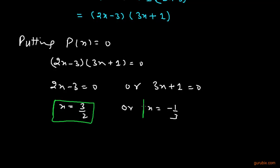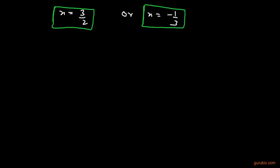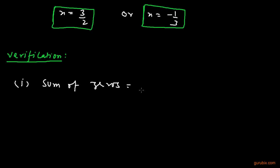At these two points the graph of the polynomial intersects the x-axis. Now we shall verify the relationship between the zeros and the coefficients. For verification, we first find the sum of zeros: 3 over 2 plus minus 1 over 3.